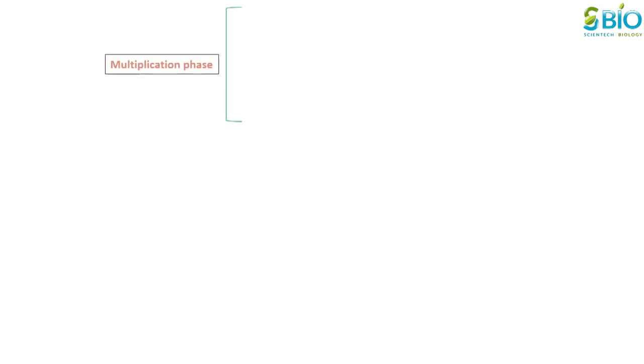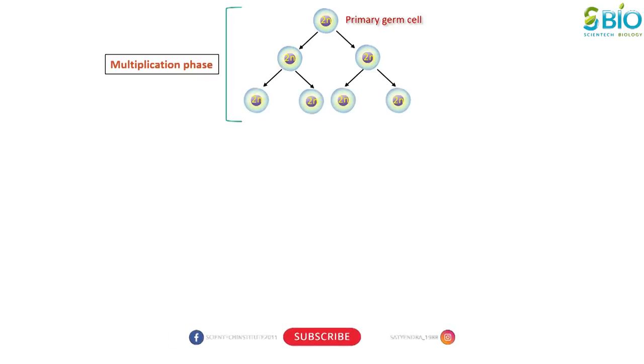The process of spermatogenesis starts with the multiplication phase. At maturity, the primordial germ cells divide by mitosis to produce a large number of spermatogonia. Two types of spermatogonia cells are formed. Type A spermatogonia are the stem cells which divide to form additional spermatogonia. Type B spermatogonia are the precursors of sperm, meaning type B spermatogonia differentiate into primary spermatocytes.